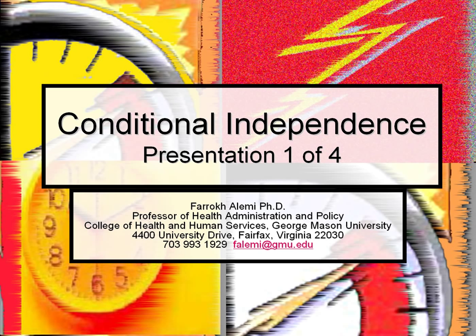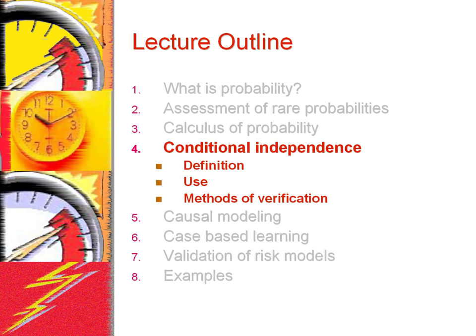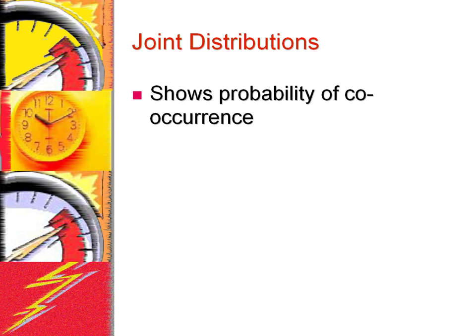This is a lecture by Farooq Alemi, narrated by Angad Bhuttar. This is the first of four lectures on conditional probability, specifically on conditional independence, part of a series intended to prepare you to do probabilistic risk analysis. This lecture introduces you to several methods of checking for conditional independence, an important element of causal models.